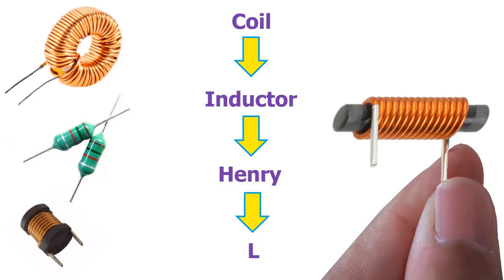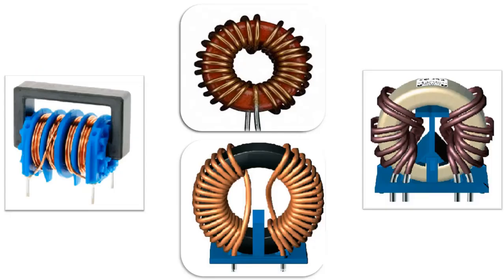In daily life, coils are used as toroid, resistance, and surface mounting types. A coil is the circuit device that is formed by winding a conductive wire over and over. Coils are composed of winding and core. In coil windings, varnished insulated copper wire is used.